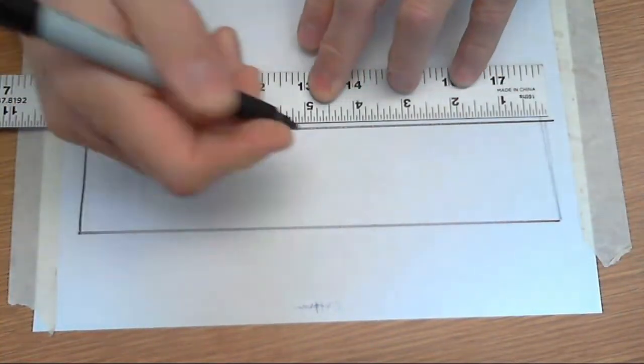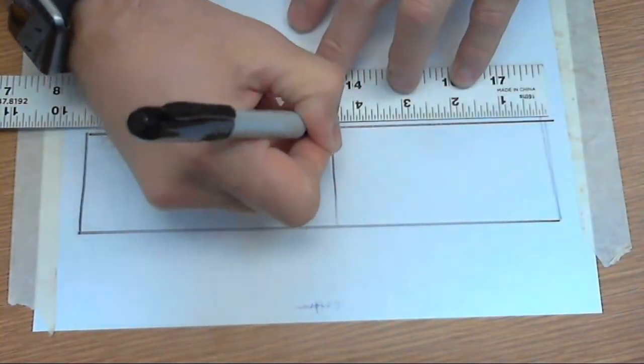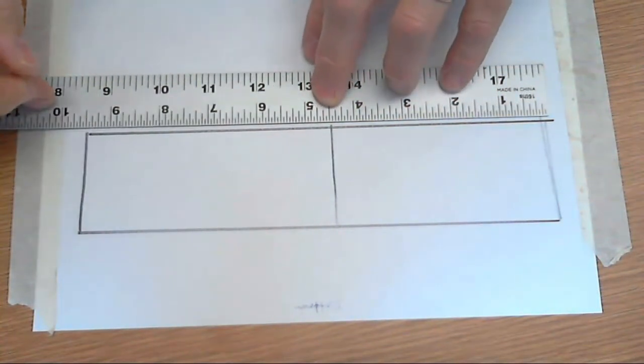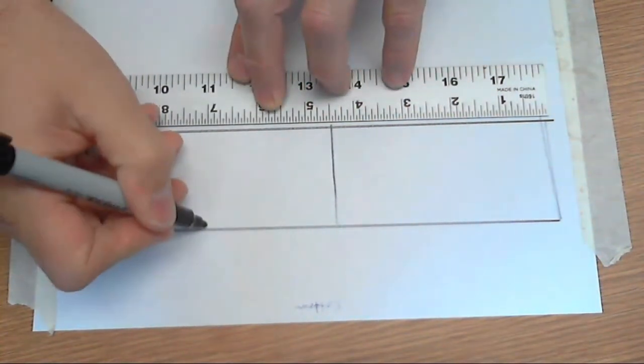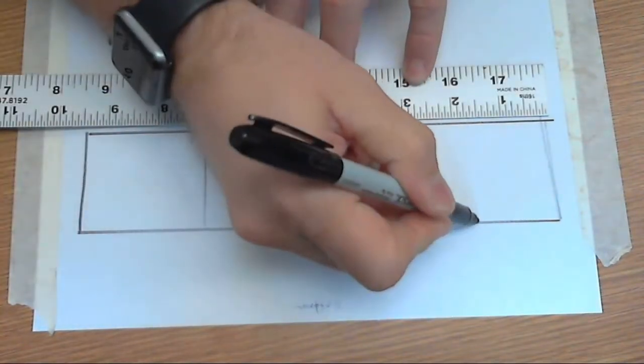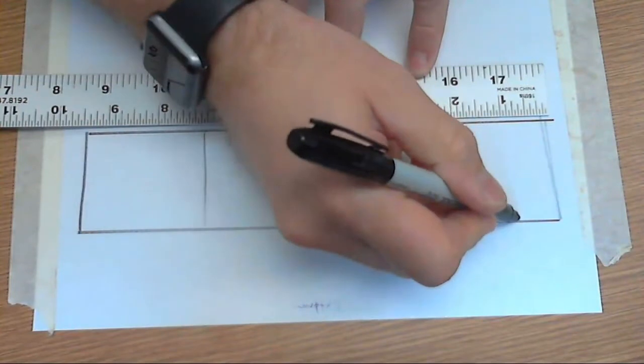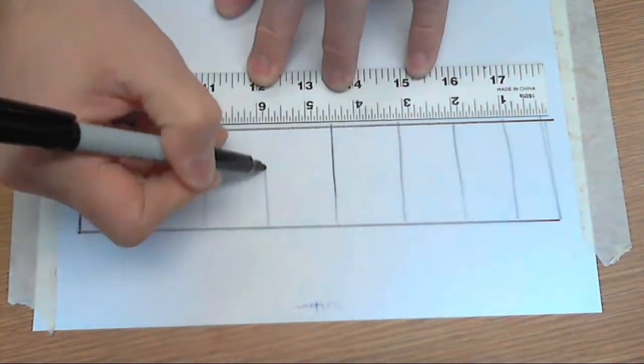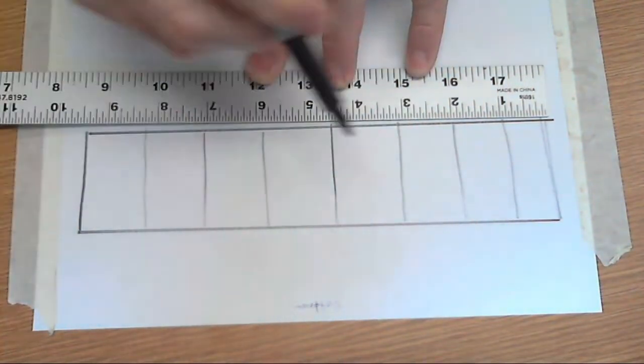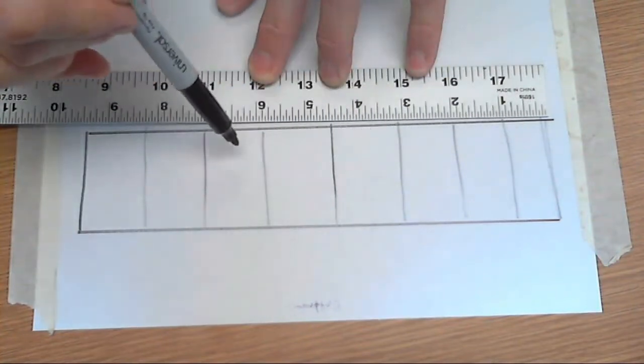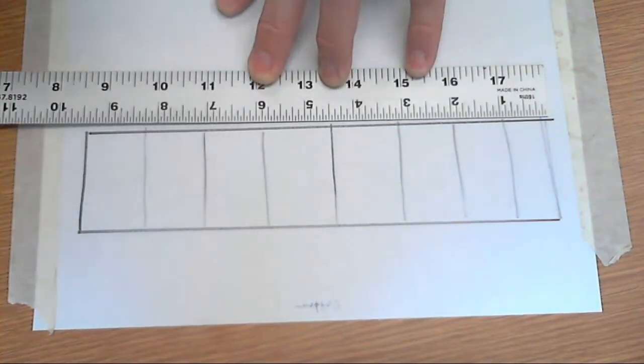We're gonna divide this in half, in half, and in half again, and then in half again. So you're gonna wind up with one, two, three, four, five, six, seven, eight sections.